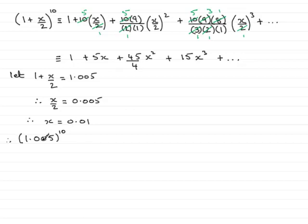So therefore, if I do that, I can say that this is going to be approximately 1 plus 5 times 0.01. Then we have 45 over 4 multiplied by 0.01 squared, 0.01 squared. And then finally, 15 times 0.01 cubed. And so on.